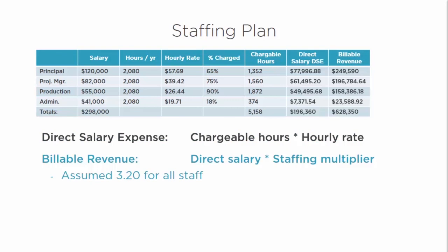Billable revenue is how we calculate how much of our time is billable and what the amount would be. You take your direct salary and multiply it by your staffing multiplier — in this case 3.2 as a conservative estimate. Billable revenue can be upwards of $250,000 for the principal, down to $23,000 for admin staff, for an overall total of just over $628,000.